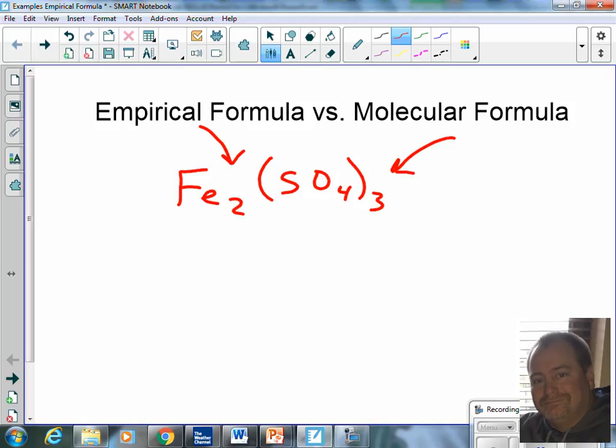What about N2Cl4, dinitrogen tetrachloride? Is that an empirical formula, a molecular formula, both? That is a molecular formula. Why? Because I can reduce it. If I would reduce it, the empirical formula would be NCl2, right? So can you see the difference between molecular and empirical?